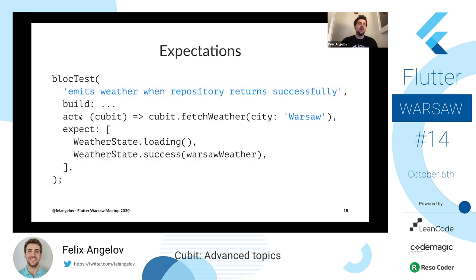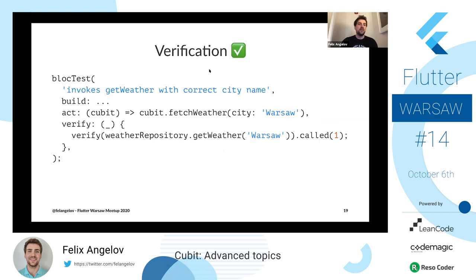Now we can stub the repository. Because it's a mock, we can use the when API — anytime anyone calls get weather on the weather repository, regardless of arguments, we can answer with a Warsaw weather constant. In the build callback we return that cubit instance, in act we call fetch weather with Warsaw, and in expect we verify the cubit emits a loading state followed by a success state with the constant weather. We can also add a verify step to ensure the correct method was called with the correct argument.